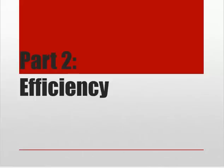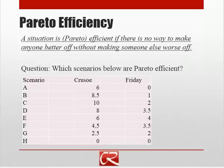Up until now, we've talked about the idea of efficiency in terms of maximizing the gains from trade or maximizing the size of the economic pie. But let's go ahead and delve into that idea of efficiency a little bit more. The most common way that economists look at efficiency is what's called Pareto efficiency, named after an Italian economist named Pareto. The idea of Pareto efficiency is that a situation is efficient if there's no way to make anyone better off without making someone else worse off.